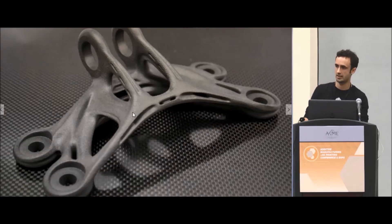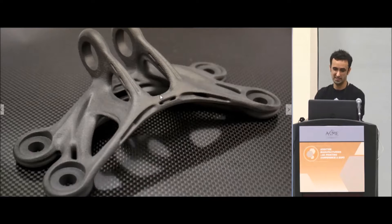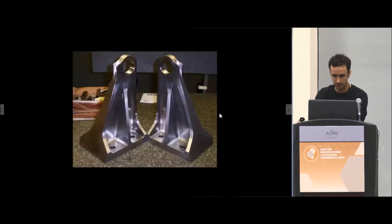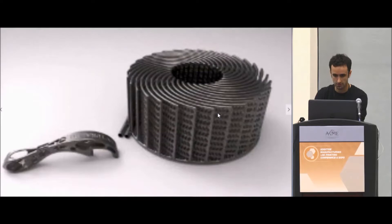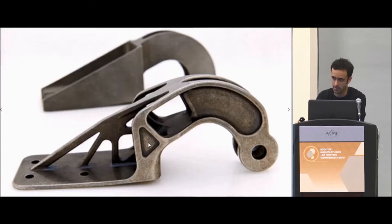So this is an example of an optimized topology from Solid Thinking or another software. Solid Thinking will spit out basically a mesh or a NURB surface that looks something along these lines. This has been optimized for mass reduction. The original file was basically a block of steel that was hogged out with a CNC machine. Run through an optimization software, we basically got this new, much more intricately designed, much harder to machine part.